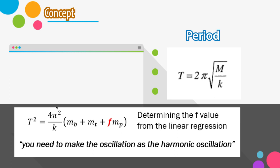If you take the square of the period, you will get T squared equals 4 pi squared divided by k, times the total mass — which is the mass of your object, plus the mass of the containers, plus f times the mass of the spring. The f here, highlighted in red, means you need to take into account what kind of f applies. Determining the f value for the linear regression will be very beneficial to evaluate what kind of oscillatory motion you have and what it means. You need to discover what f is and the consequence of your choice of f.